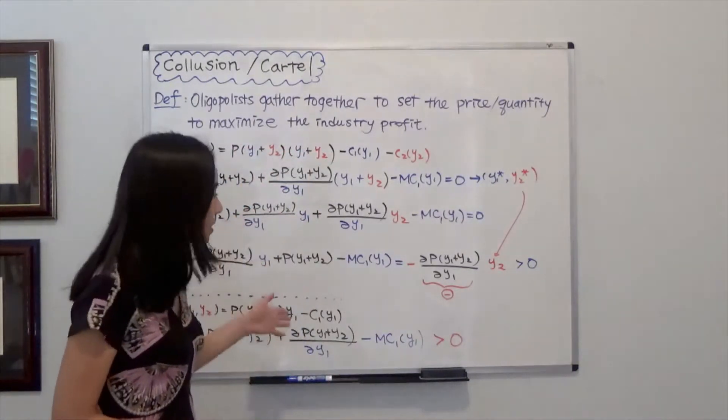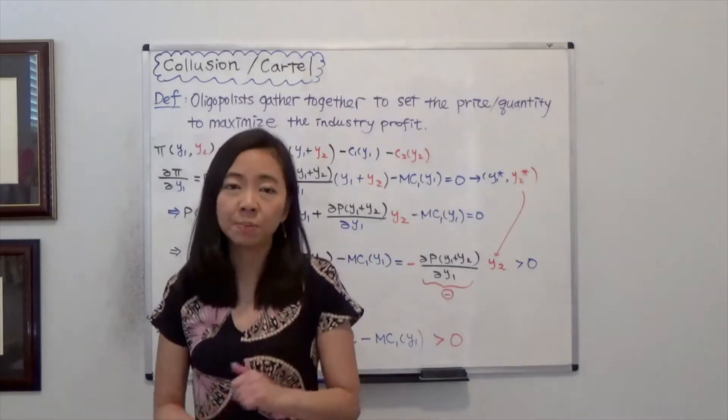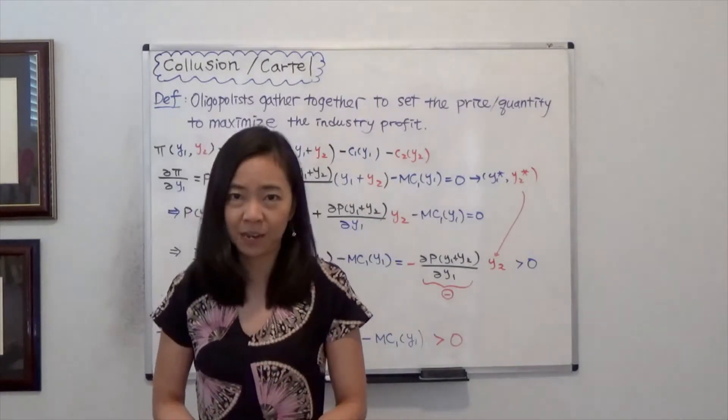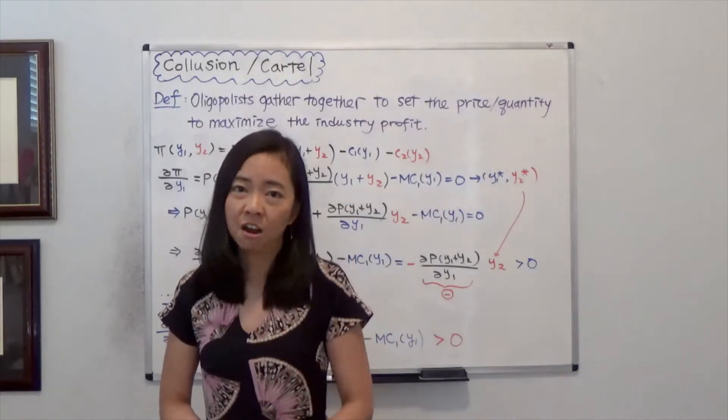In this clip, I'm going to show you mathematically why typically a cartel is not very stable, meaning each firm has incentive to cheat on the cartel agreement.